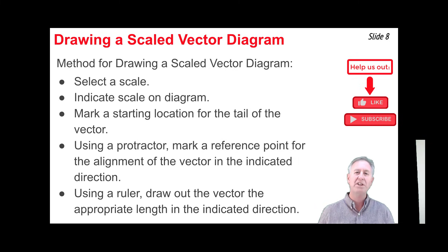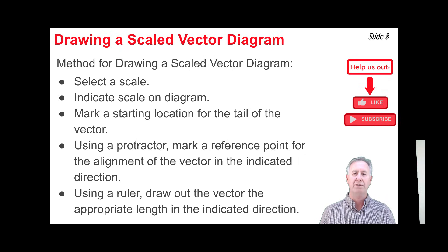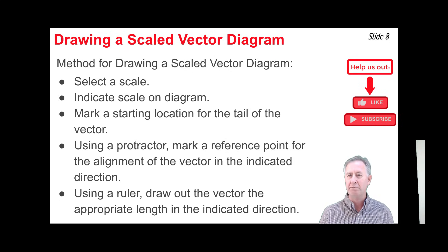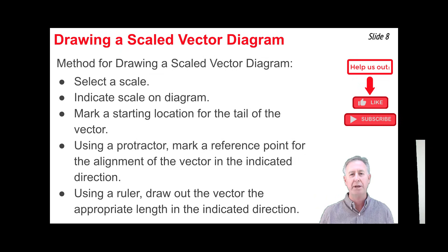Second, write the scale down on the sheet of paper so everyone knows what it is. Third, mark a starting location for the beginning of the vector — the tail. Plan it out so the vector fits in the allotted space, considering whether you should start at the lower left side of the page, the upper right side, and then mark that starting location.